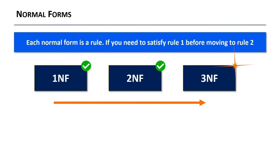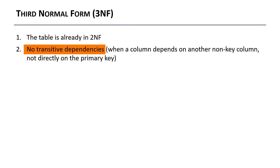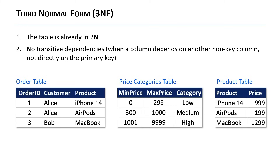That brings us to third normal form, where the first and second normal forms must already be satisfied — just like in martial arts you need a yellow belt and blue belt before earning a black belt. In third normal form, there should be no transitive dependencies. That's when one piece of data depends on another piece of data, which itself depends on the main thing in the table. For example, category depends on price, and price depends on product — category isn't directly derived from the product. To fix this, we put each layer in its own table: the order table, the pricing categories table, and the product table.